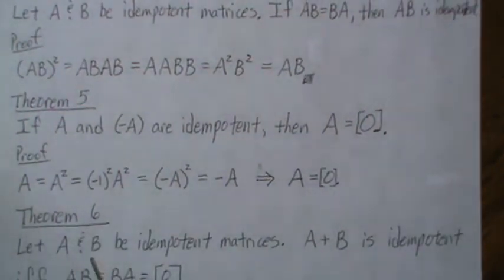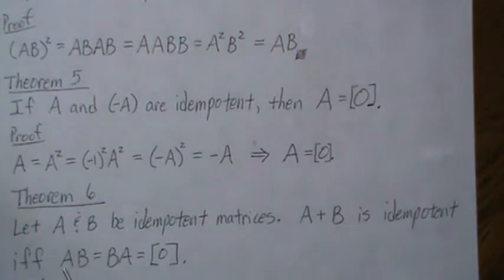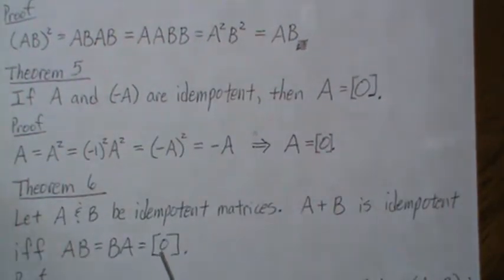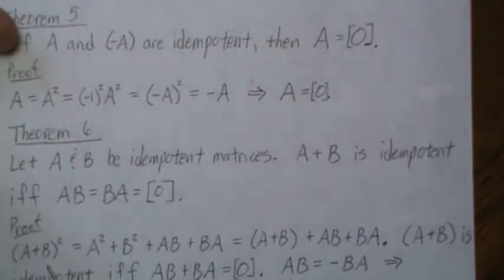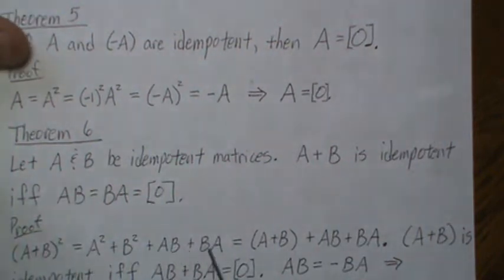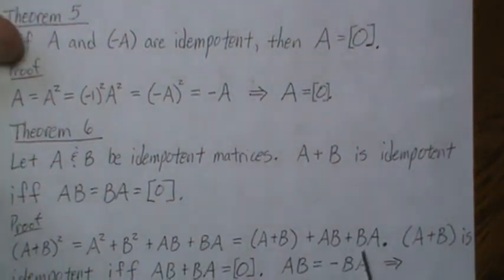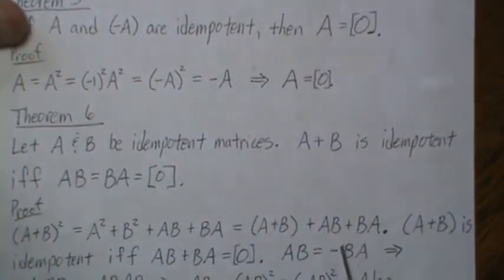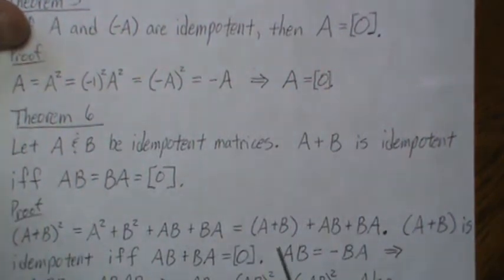Theorem six: let A and B be idempotent matrices. Then A plus B is idempotent if and only if AB equals BA equals the zero matrix. The proof starts by expanding A plus B squared, which equals A squared plus AB plus BA plus B squared. Since A and B are idempotent, that's A plus B plus AB plus BA. So A plus B is idempotent if and only if AB plus BA equals the zero matrix.